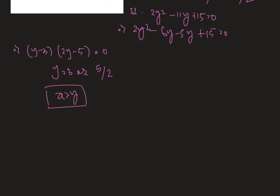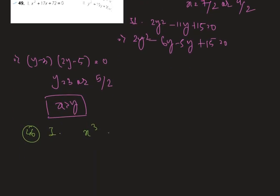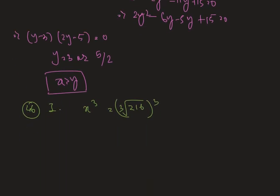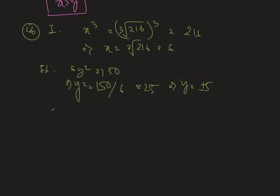Moving to question number 46: the first equation gives x³ = ∛216. Since the cube root of 216 is 6, x = 6. From equation 2, we get 6y² = 150, so y² = 150/6 = 25, therefore y = ±5. Comparing, x = 6 is clearly greater than y.